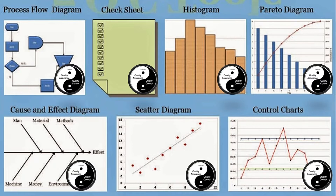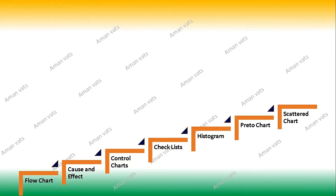We use some more methods in analyzing our data and deriving decisions, but these are primarily the seven tools of quality used in project management — especially from the PMP examination point of view. For learning project management, it is really important that you understand all these tools in detail.